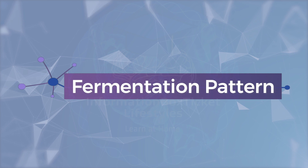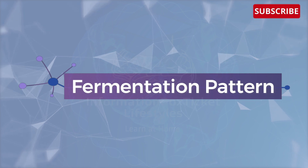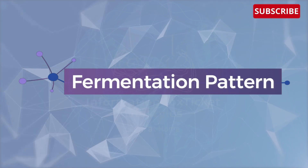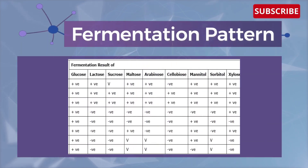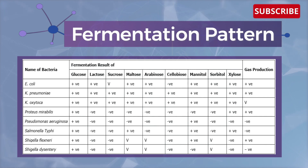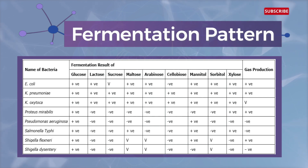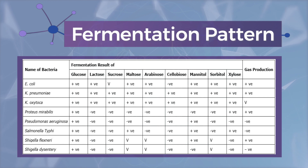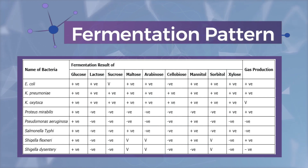Let's see the fermentation pattern of some common bacteria. The table shows fermentation patterns where a positive sign means positive fermentation, a negative sign means negative fermentation, and V means variable reaction.